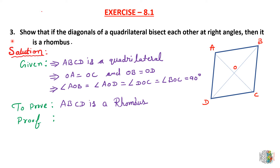Question number 3 is: show that if the diagonals of a quadrilateral bisect each other at right angles, then it is a rhombus. So if we have a quadrilateral whose diagonals bisect each other at right angles, then it will be a rhombus.